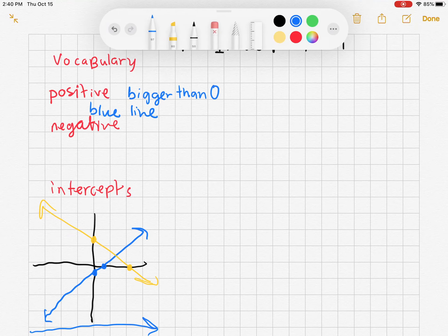Similarly, if you consider the yellow line, it's not pointing up, it's pointing down. That's going to have a negative slope. The yellow line is smaller than zero.